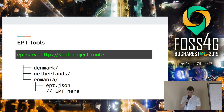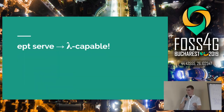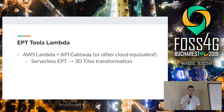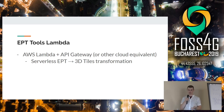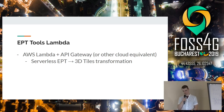More interesting is that this translation is actually idempotent and stateless, so you can run it in a Lambda. With something like AWS Lambda and API Gateway, or the equivalent in another cloud, you can have a serverless reflection of all your point clouds in EPT as 3D Tiles for very cheap — you're not paying for server time, just milliseconds of the actual transformation, so you don't have a server running all the time.